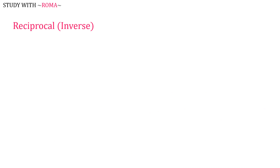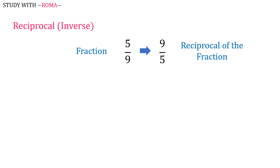The reciprocal of a number is 1 divided by the number. For fractions, simply switch the numerator and the denominator. For the fraction 5 over 9, the reciprocal is 9 over 5.